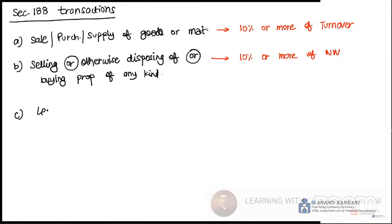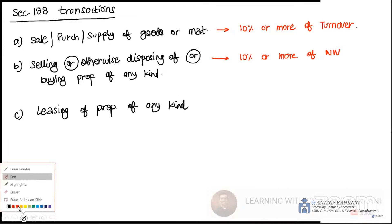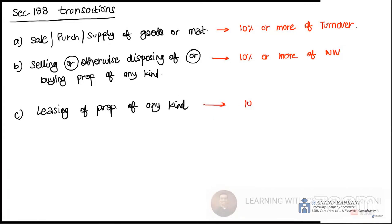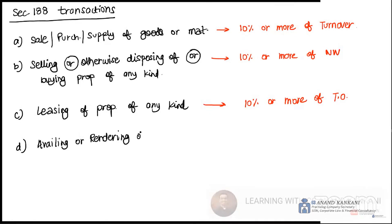The third transaction: if you are leasing property of any kind — whether moveable or immovable property — the limit for this is 10% or more of the turnover. Then you have the next one: availing or rendering of any services, and the limit for this is also 10% or more of the turnover.